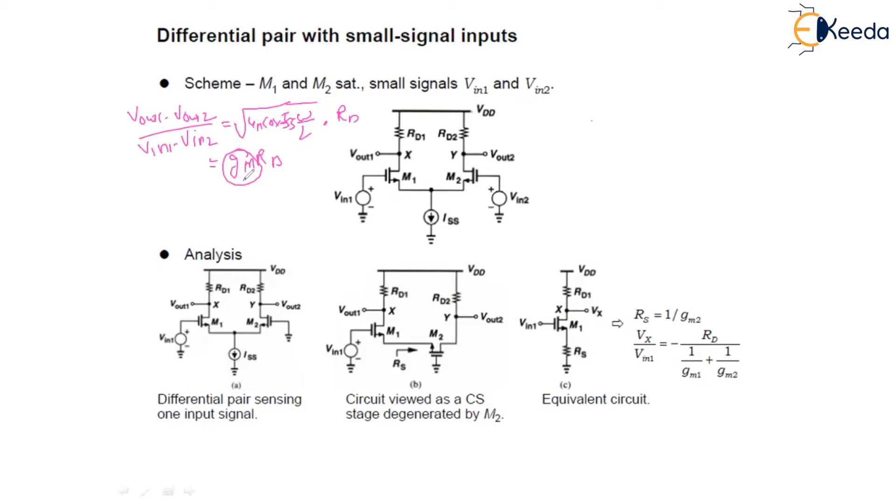Thus, now we will employ a method of small signal analysis to arrive at the same result. First we will assume that Rd1 equals Rd2. From this circuit, driven by two independent signals Vin1 and Vin2, the output can be computed by superposition.